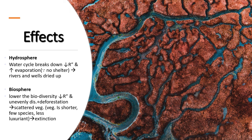The impacts on the hydrosphere include breakdown of the water cycle, reducing precipitation, increasing evaporation due to no shelter, and rivers and wells drying up. On the biosphere, biodiversity is lowered as reduced soil fertility leads to no vegetation. There is also uneven distribution of forests, deforestation, scattered or shorter vegetation, and fewer species — for example, only cactus species survive while other species go extinct.